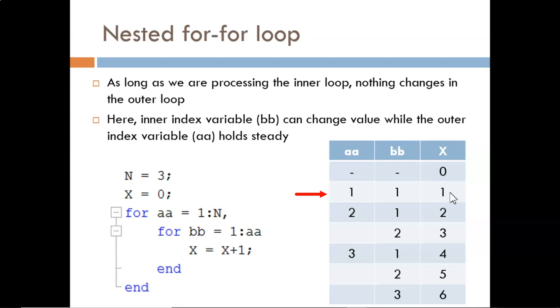Now the inner loop is ended, the outer loop is ended, and we return to the top. AA takes on its next value of 2. Now the inner for statement says BB will range from 1 to 2. So I can fill in both of those slots in the table.